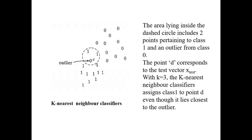Two points pertaining class 1 and outlier from class 0. The point D corresponds to the test vector X test with K equal to 3. Total, we have considered three elements. K nearest neighbor classifier assigns class 1 to point D. Even though it lies closest to the outlier, still it is considered as class 1. In the class 1, we have considered as zeros.